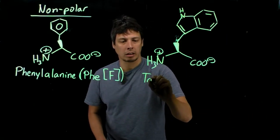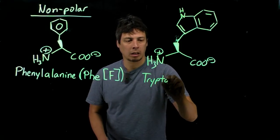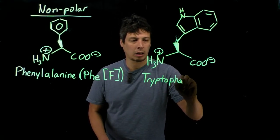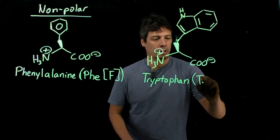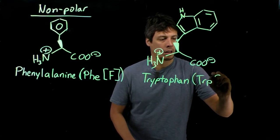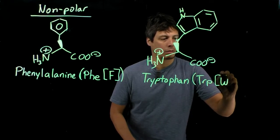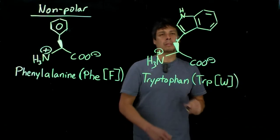And this is called tryptophan. The three-letter code for this is TRP, and the one-letter code is really weird, is W.